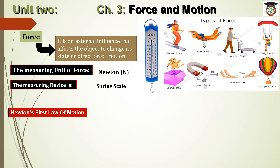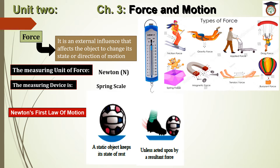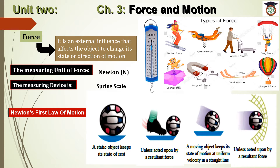Now we are going to talk about Newton's First Law of Motion. If we have a static object like a ball, the static object keeps its state of rest unless acted upon by a resultant force — unless a player comes and kicks the ball or air affects the ball to change its state. A moving object keeps its state of motion at uniform velocity in a straight line; if no force acts on it, it will keep moving in a straight line with uniform velocity unless a force acts on it to change its state or stop it.